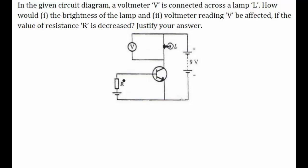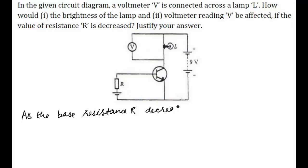R is the base resistance for this semiconductor. As the base resistance R decreases, the input circuit will become more forward biased, and thus it would decrease the base current.